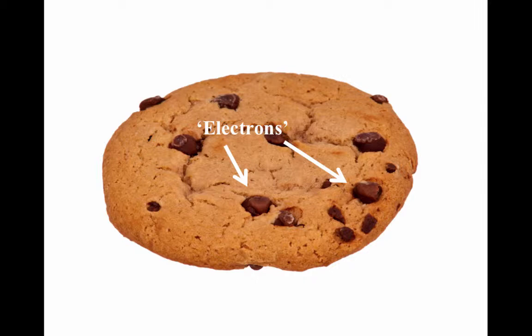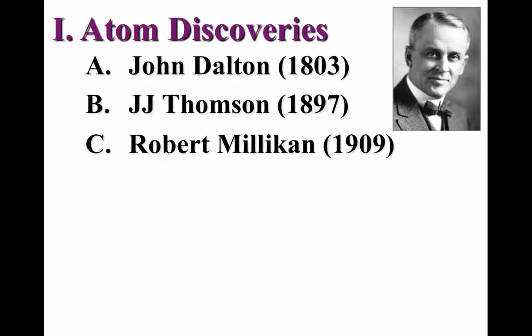We might better identify with a chocolate chip cookie, in which the electrons are the chocolate chips, while the positive part of the atom is the rest of the cookie. The point is, we now have the model of an atom that includes negatively charged particles stuck in a positively charged matrix.